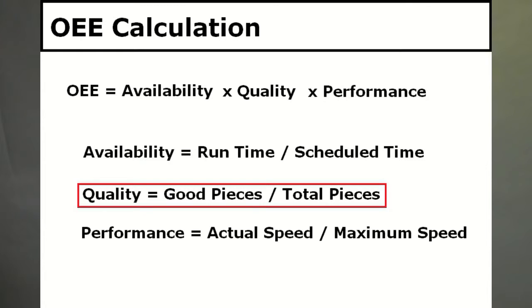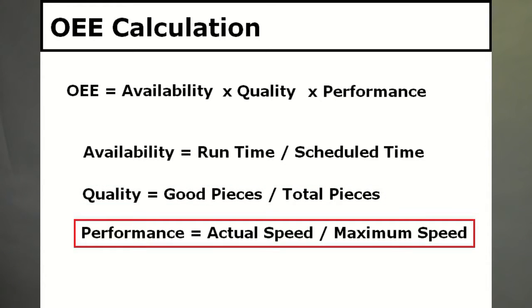Second, quality, which is the percentage of parts made that are good. For the old school, this used to be called yield. Third, performance, which is the machine speed as a percentage of standard. If a machine is supposed to be turning out 200 pieces a minute but is only producing 100 per minute, it is running at 50% performance.